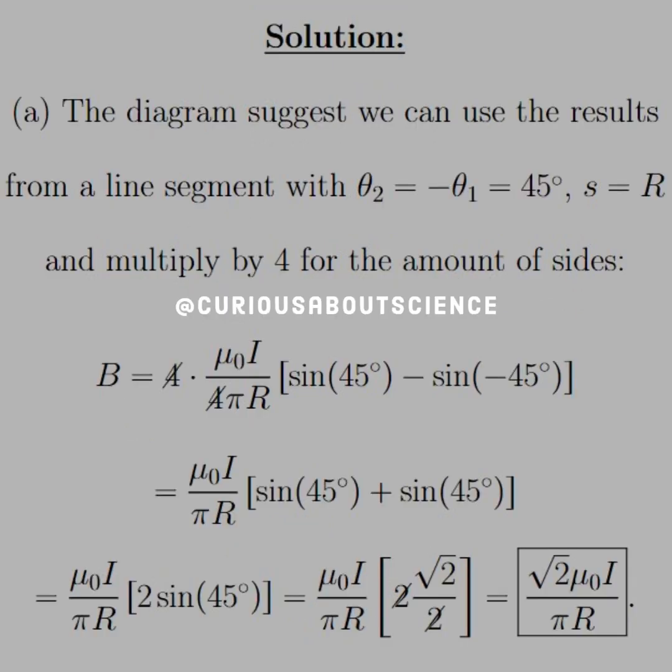Alright, so to start our solution, the diagram suggests that we use the results from the line segment. Again, the thetas we defined a little earlier when we looked at the diagram. But when we bisect that 90 degree angle with the ray to the center, the angle that it forms is 45 degrees. And therefore, the other angle has to be the negative of that.